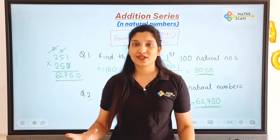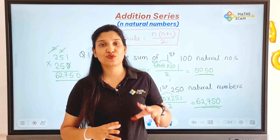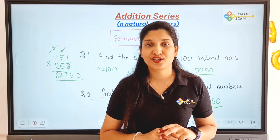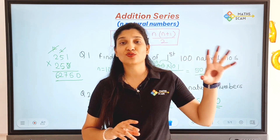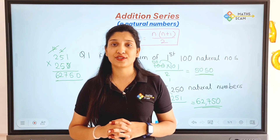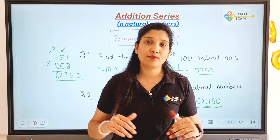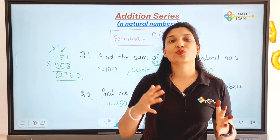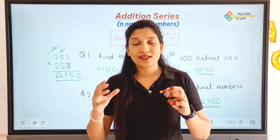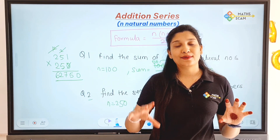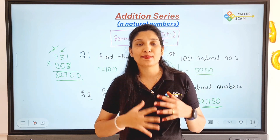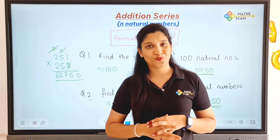Whenever a question comes to find the sum of first 500 natural numbers or first 1000 natural numbers, you can use this formula: n into n plus 1 divided by 2. That means that number multiplied by its successor, divided by 2.